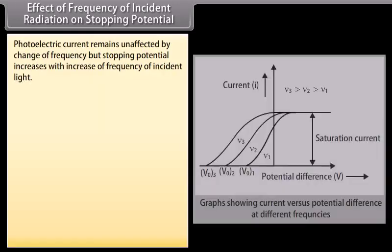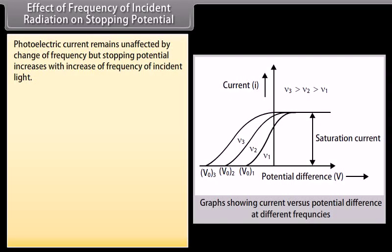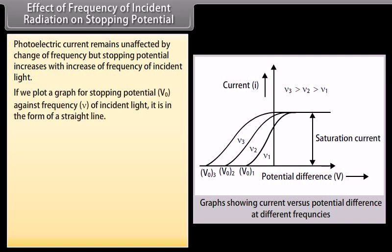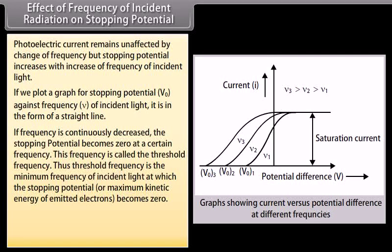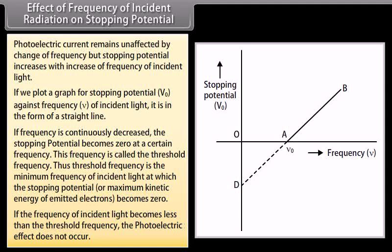Photoelectric current remains unaffected by change of frequency, but stopping potential increases with increase of frequency of incident light. If we plot a graph of stopping potential V-zero against frequency nu of incident light, it is a straight line. If frequency is continuously decreased, the stopping potential becomes zero at a certain frequency called the threshold frequency. Threshold frequency is the minimum frequency of incident light at which the stopping potential or maximum kinetic energy of emitted electrons becomes zero. If the frequency of incident light is less than the threshold frequency, the photoelectric effect does not occur.